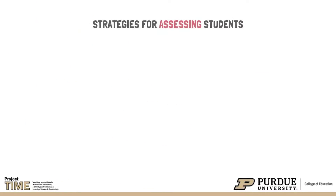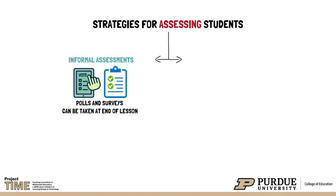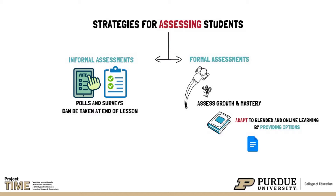There are also a variety of strategies that teachers can implement when assessing students in blended and online learning. Teachers may utilize informal assessments such as providing a short poll or survey question for students to complete as they finish the lesson. Teachers may also utilize formal assessments to determine content mastery or growth. For example, students might be tasked with completing a book report, which can be adapted to blended and online learning by providing students the option to complete the report using text in a Google or Word document, or via an audio or video recording utilizing programs like Flip or iMovie.